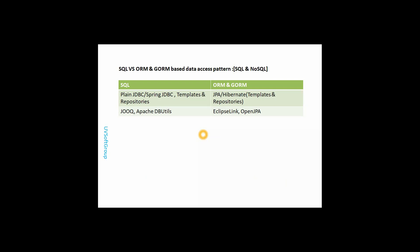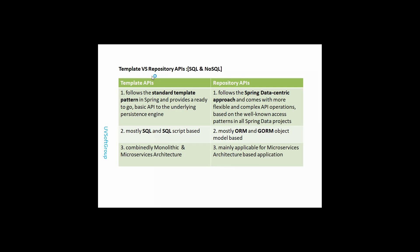Here are the main data access patterns. There is the SQL-based access pattern — plain JDBC, Spring JDBC, and template and repository programming — and the ORM/JPA-based access pattern, which includes JPA Hibernate. Both have templates and repositories. There are also other tools like jOOQ, Apache DB utils, and open JPA.